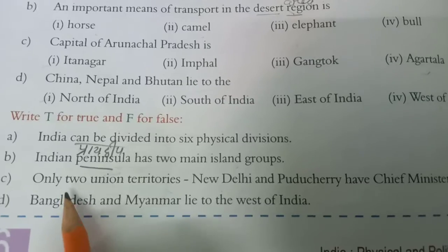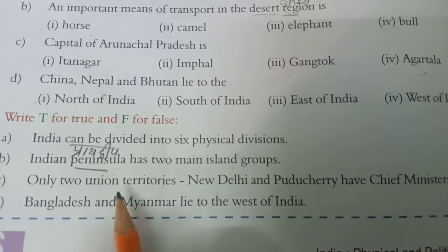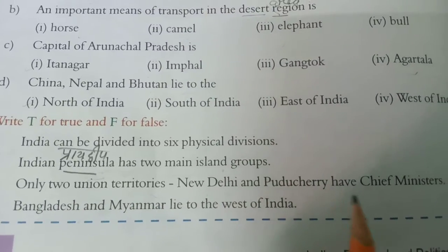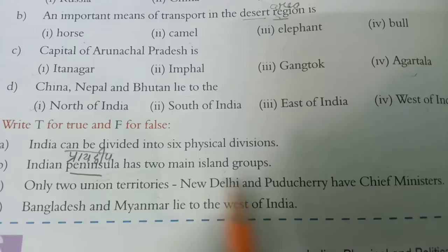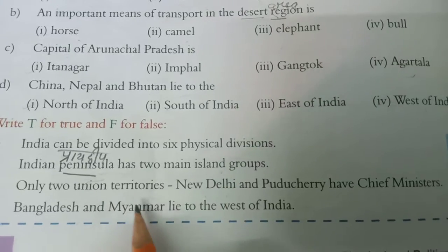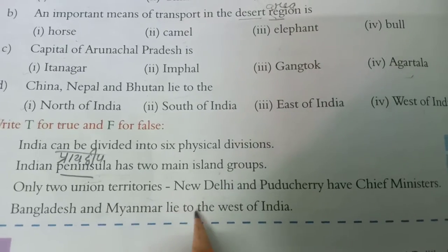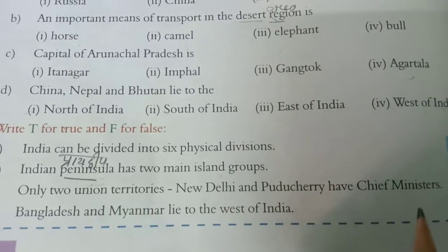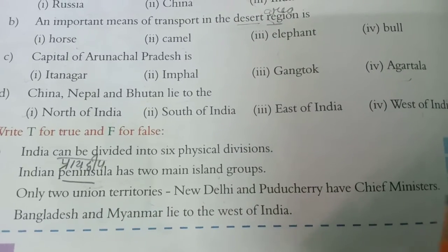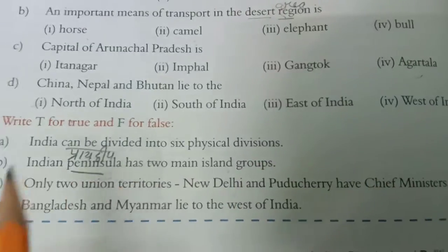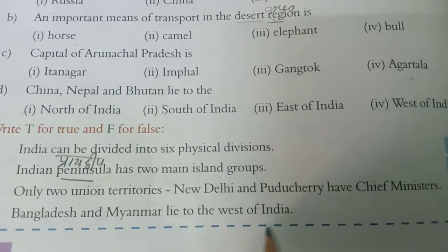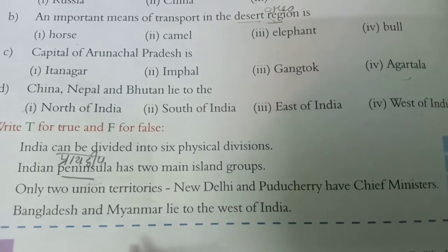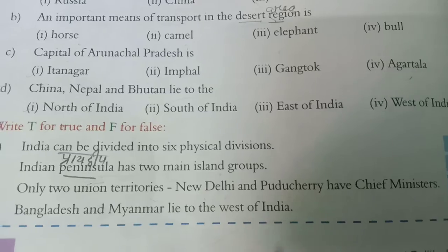Third one is: only two union territories — New Delhi and Puducherry have chief ministers. हमारी दो ही union territories ऐसी हैं — New Delhi और Puducherry जहाँ पे chief ministers हैं. Bangladesh and Myanmar lie to the west of India.